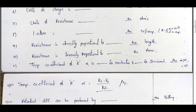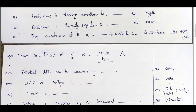Temperature coefficient of resistance alpha is positive for conductors and negative for semiconductors. In conductors, as temperature increases, resistance also increases, so alpha is positive. In semiconductors, as temperature increases, resistance decreases, so alpha is negative. The formula is alpha equal to (Rt minus R-naught) by (R-naught × T), where Rt is resistance at T°C and R-naught is resistance at 0°C. Units are per degree centigrade.